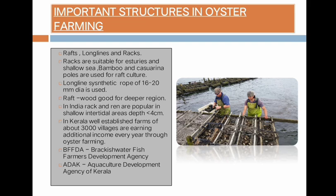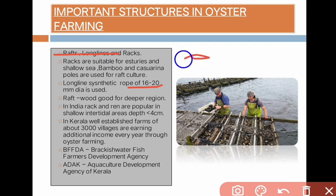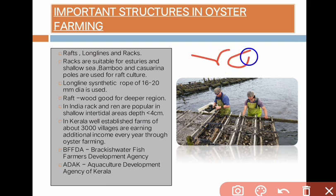Important structures used in oyster farming are rafts, long lines, and racks. Racks are suitable for estuaries. Bamboo and cashmere poles are used for raft culture. Long lines use synthetic rope of 16 to 20 mm diameter. Raft wood is good for deeper regions. In India, rack and rein structures are popular in shallow intertidal areas with depth less than 4 centimetres.